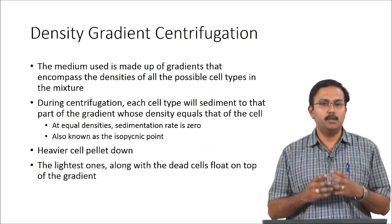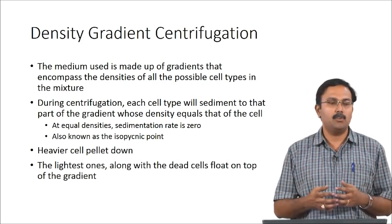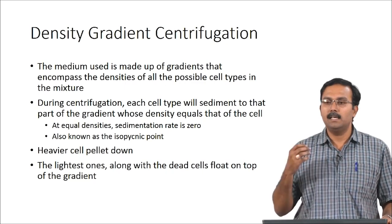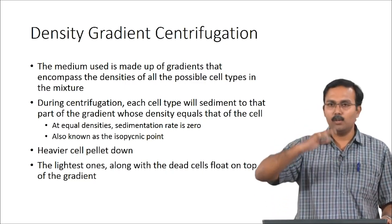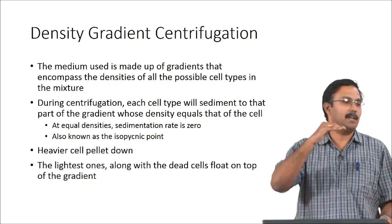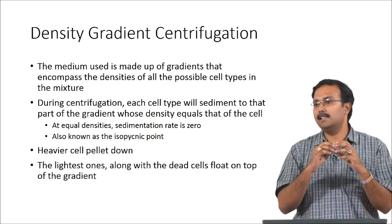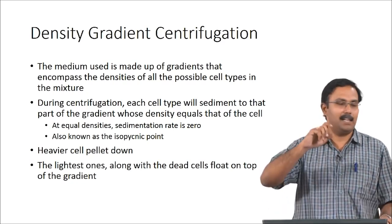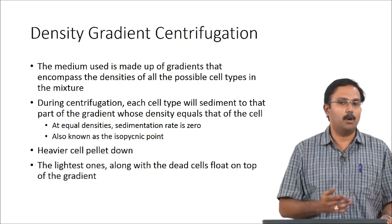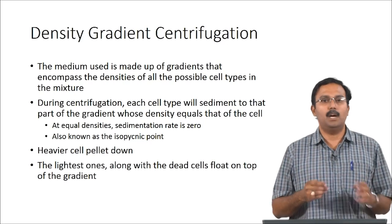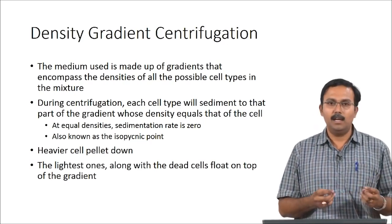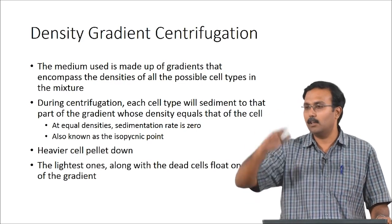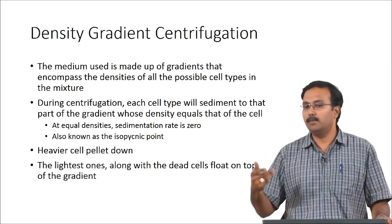The gradient medium contains molecules encompassing the densities of all possible cell types in the mixture. During centrifugation each cell type sediments but does not go to the bottom; it reaches equilibrium at the gradient where the density equals the cell's own density. At equal densities the sedimentation rate will be zero and the cells will settle there, not moving further even if centrifugation continues.